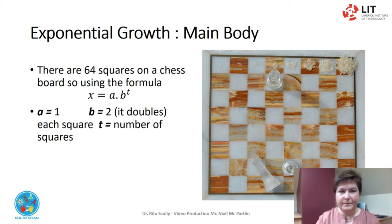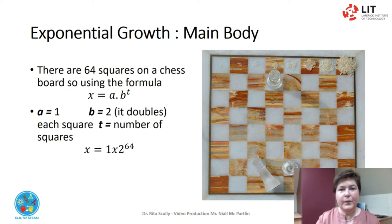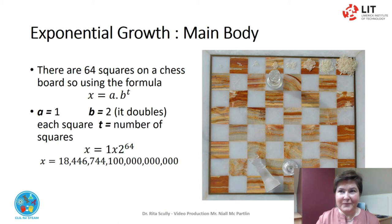And t is the number of squares — in this example, 64. So our formula is x equals 1 multiplied by 2 to the power of 64. On the last square, there will be 18 quadrillion, 446 quadrillion billion, 744 trillion, 100 billion grains of rice.